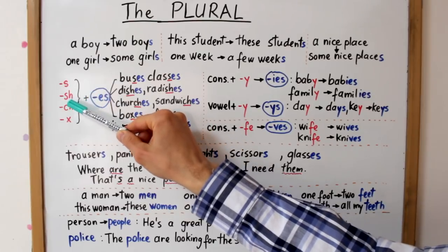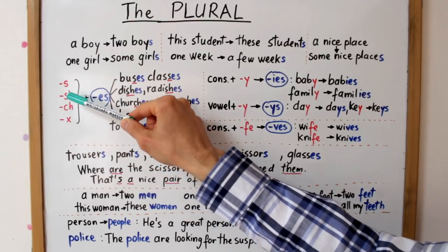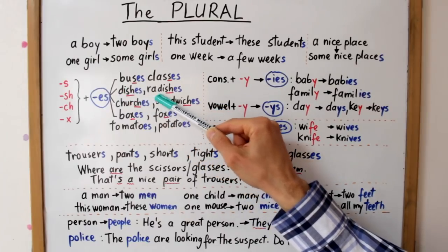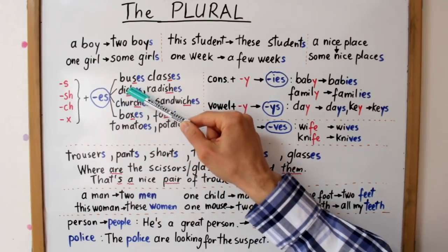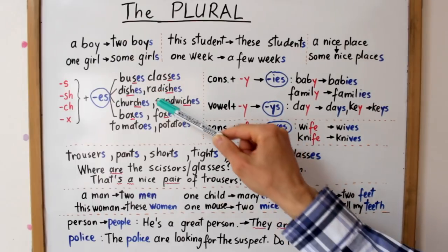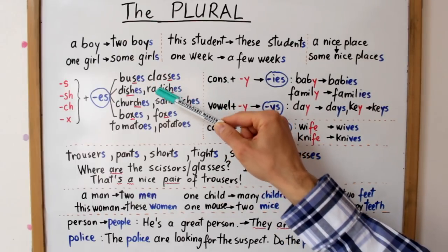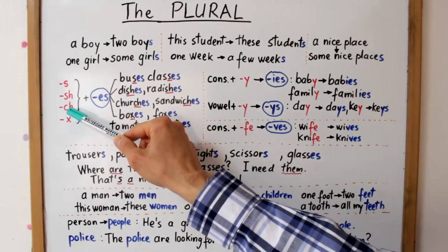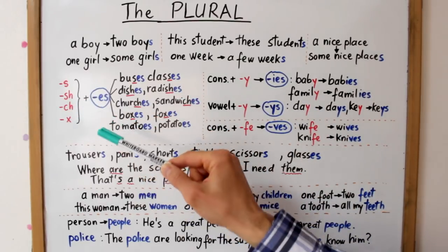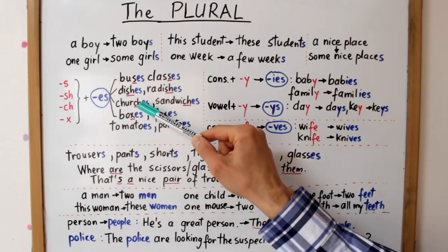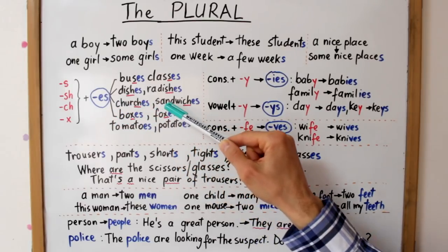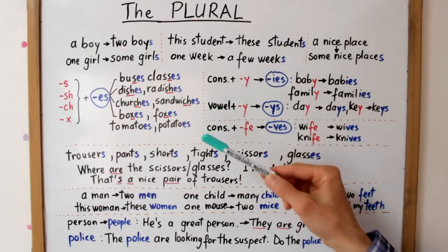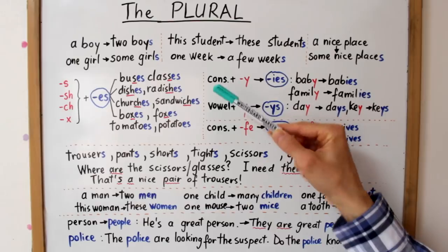În cazul substantivelor terminate în SH: dish / dishes (farfurie / farfurii sau fel de mâncare / feluri de mâncare); radish / radishes (ridiche / ridichi). Pentru terminația CH: church / churches (biserică / biserici); sandwich / sandwiches (sandviș / sandvișuri).